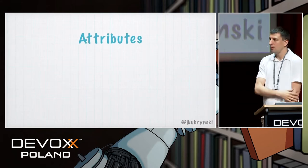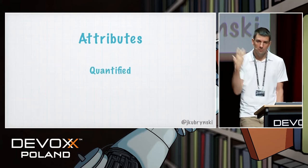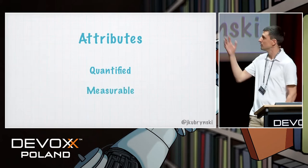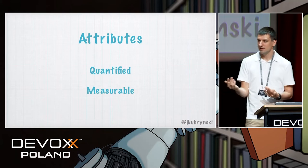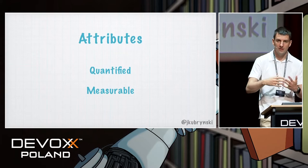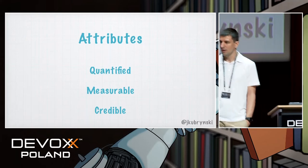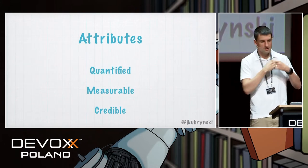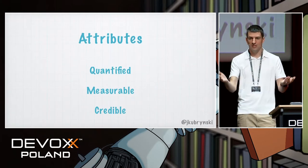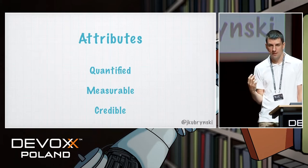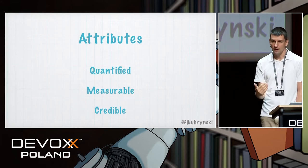So what are the most important attributes of metrics? First, the metric should be quantified — that's the most important thing. Second, it should be measurable. If you cannot measure the particular value of the metric, why do we need numbers? I have numbers but cannot verify if they are real. Third, it should be credible. What's the credibility? Is it zero because I just guessed it should be five? Or is the credibility one because I used it in a recent project and it worked exactly as expected?